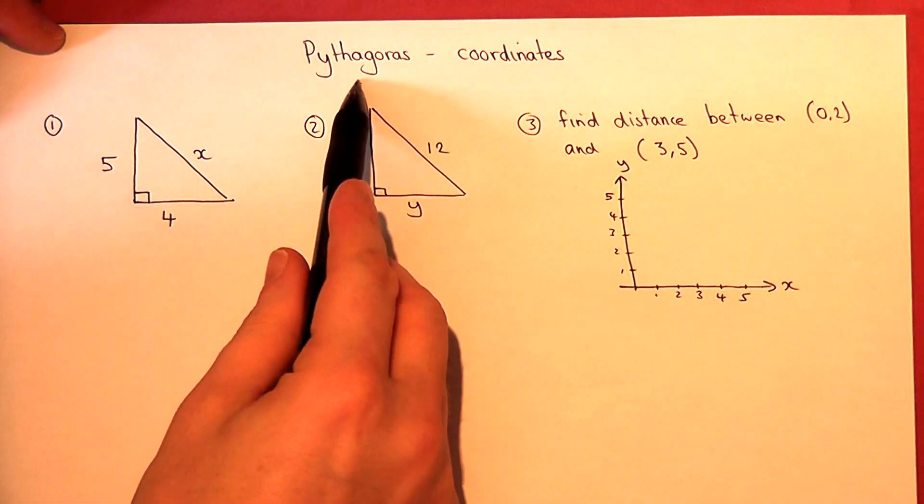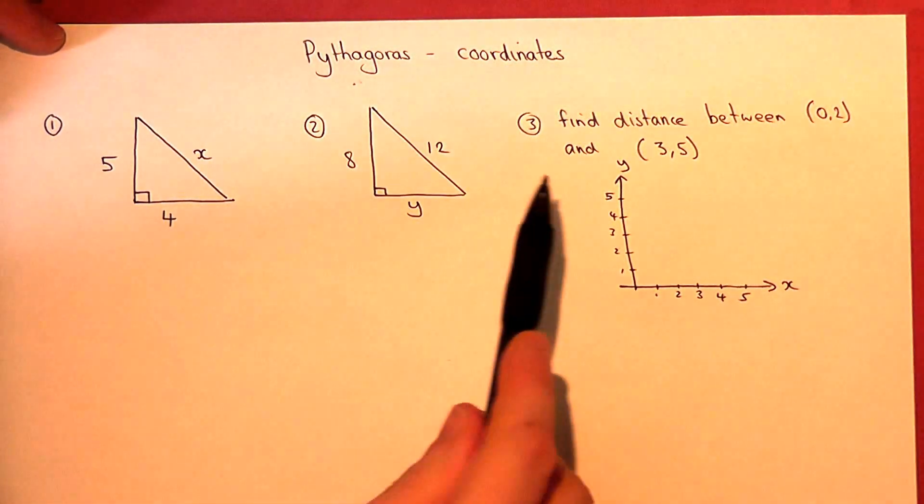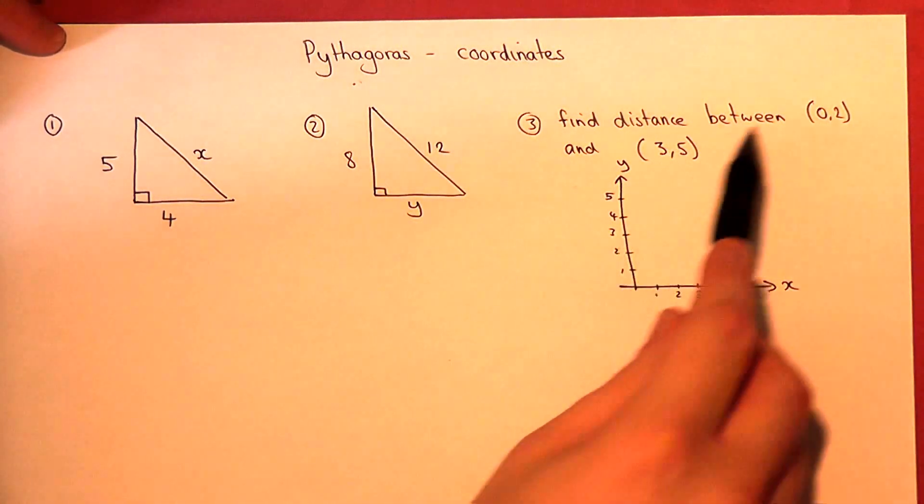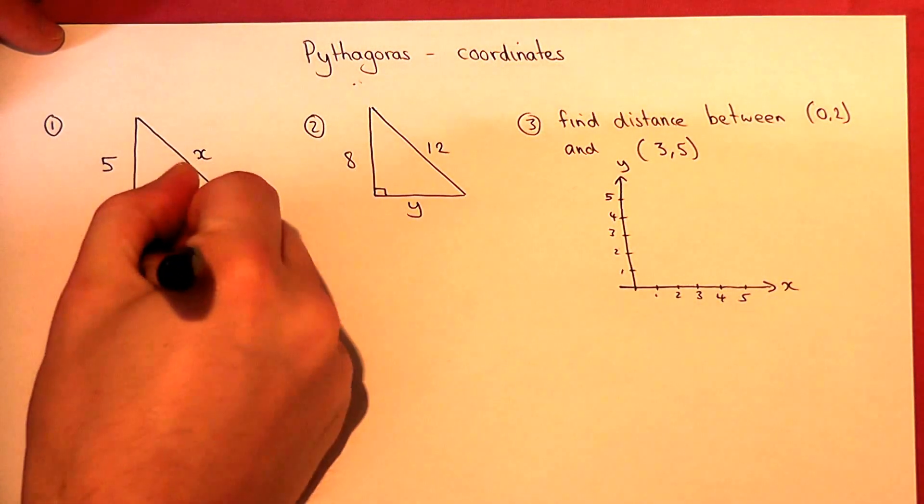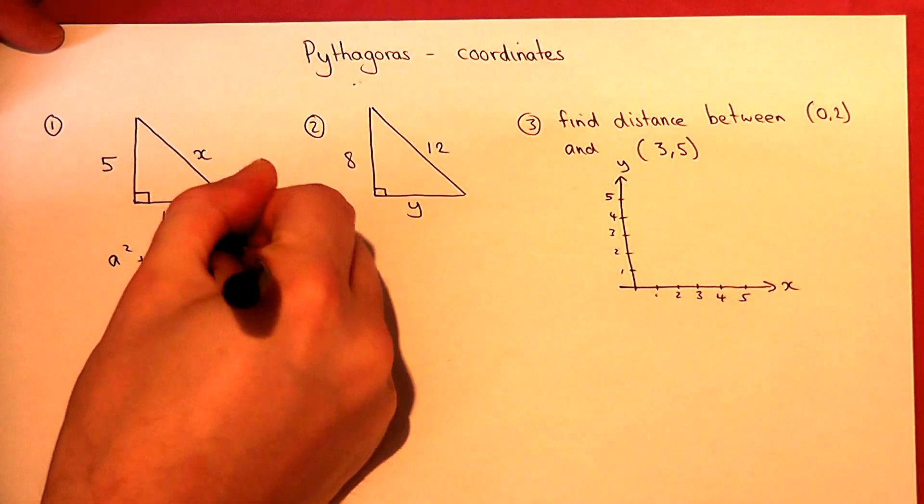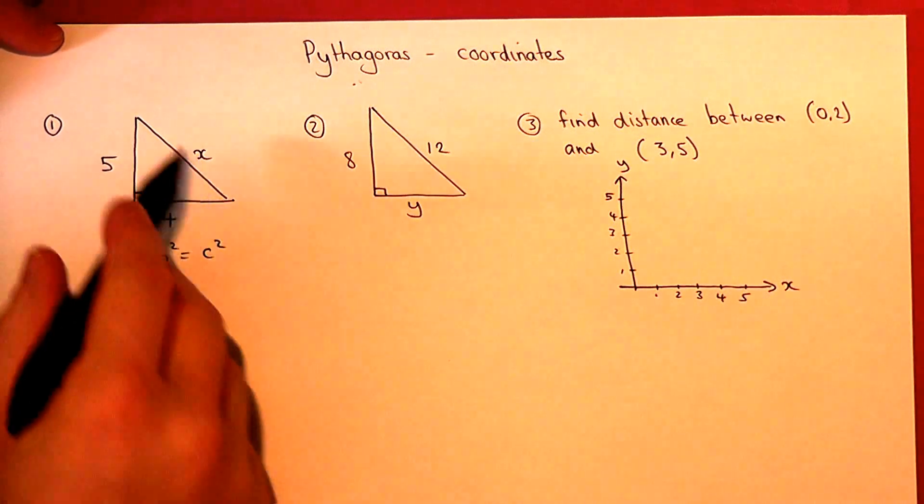This video reviews Pythagoras, but then shows how to use it when you have problems involving two coordinates. We all know Pythagoras, which is that a squared plus b squared equals c squared, where c is the hypotenuse.